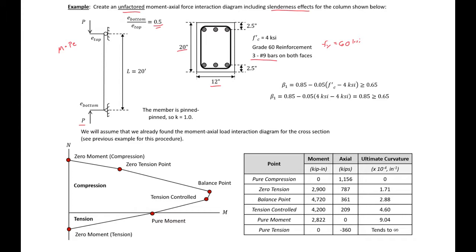We are assuming in this example that we've already found our moment-axial load interaction diagram for the cross section — this would be for our short column. I have another video where we go through and calculate several points for this cross section. We found that and we have it shown here with our pure compression, zero tension, balance point, tension-controlled point, pure moment, and pure tension points. That's always the starting point for developing a moment-axial force interaction diagram with slenderness.